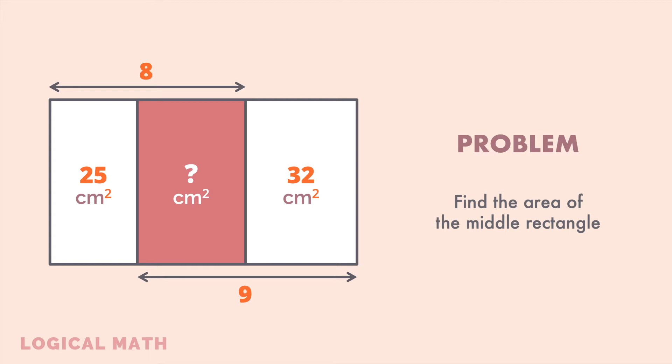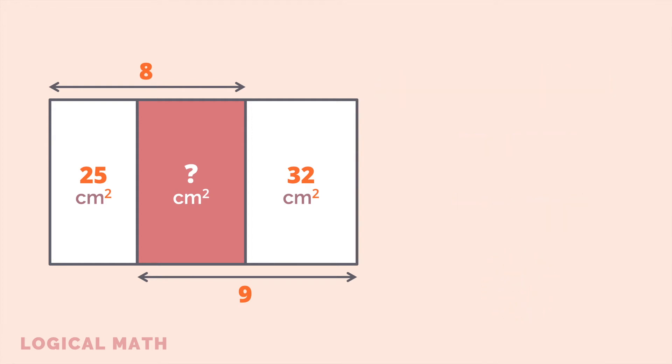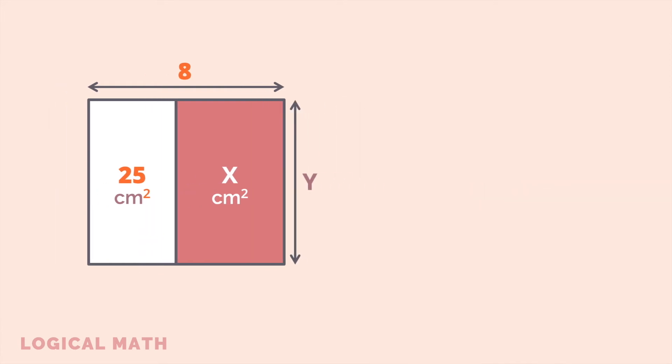Mark the area of the middle rectangle as X and the height of the large rectangle as Y. Let's concentrate on the left and middle rectangles. We can calculate the total area of these two rectangles by multiplying the height by the width, so we get 8 times Y.